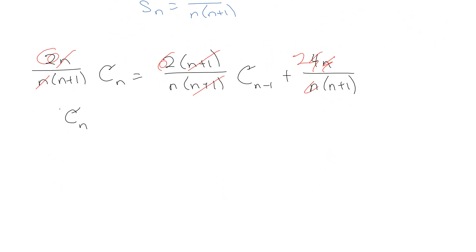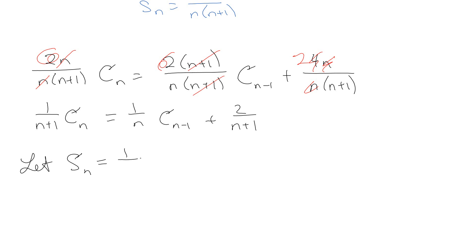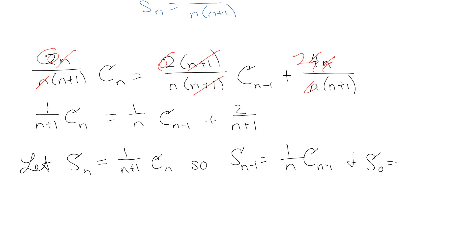Now we're seeing that familiar pattern. If we let s(n) = C(n)/(n + 1), then s(n − 1) = C(n − 1)/n, and so the recurrence becomes s(n) = s(n − 1) + 2/(n + 1).